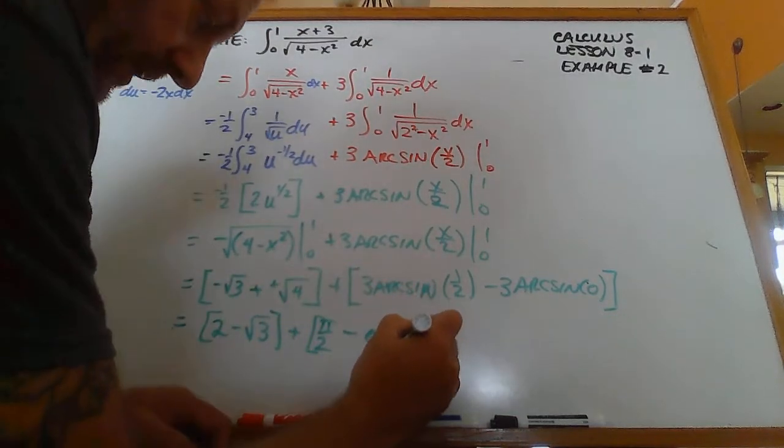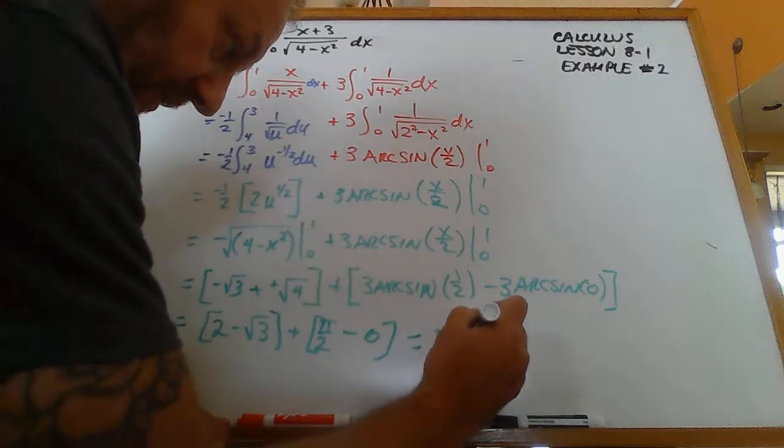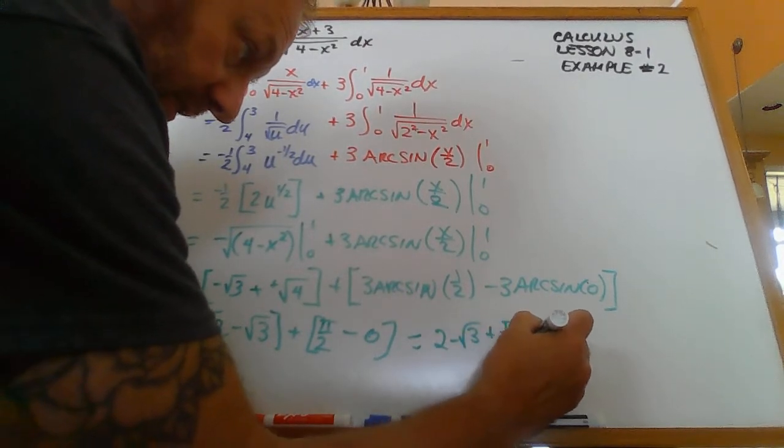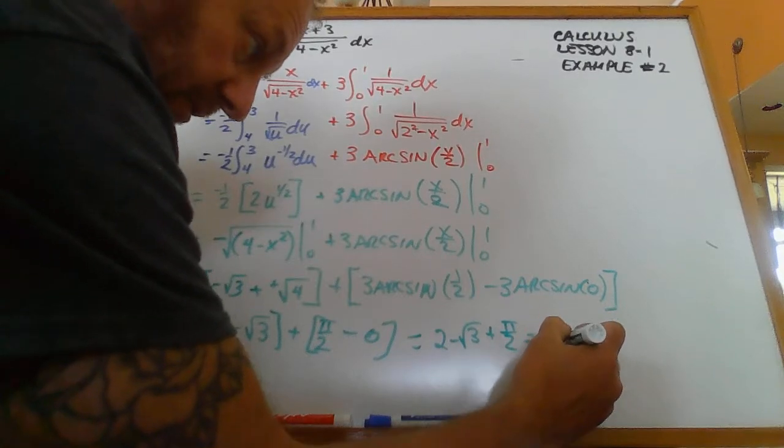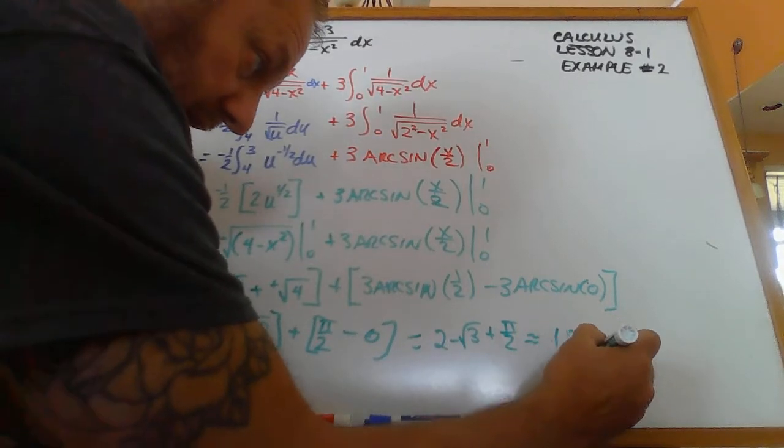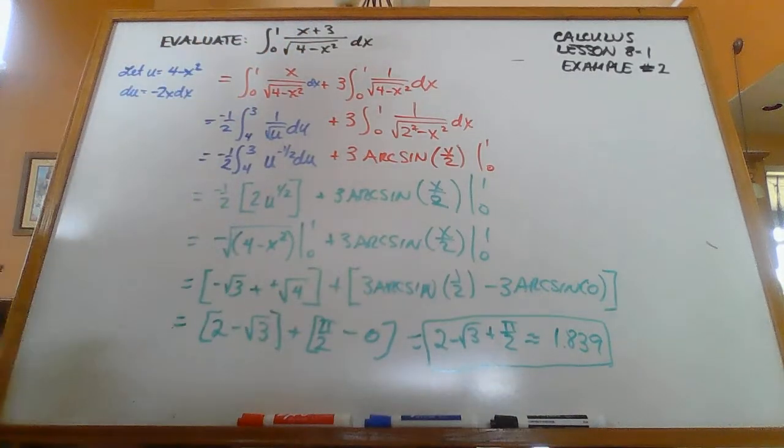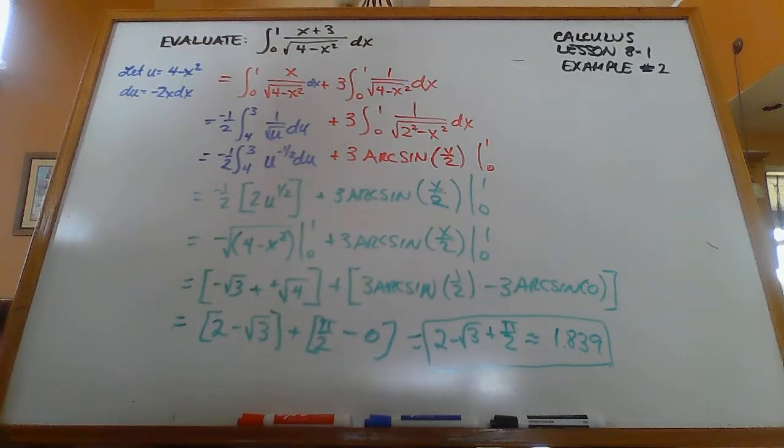And so this ends up being 2 minus the square root of 3, plus pi over 2 is the exact answer, which is approximately 1.839. So either one of those two solutions will do. And you're done.